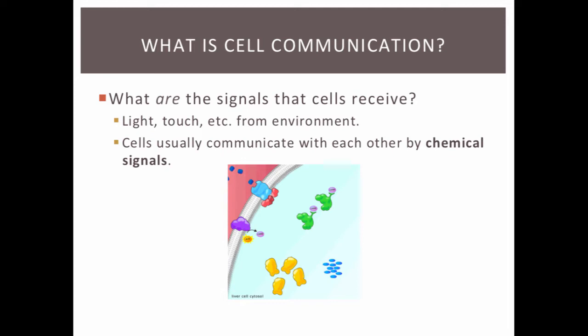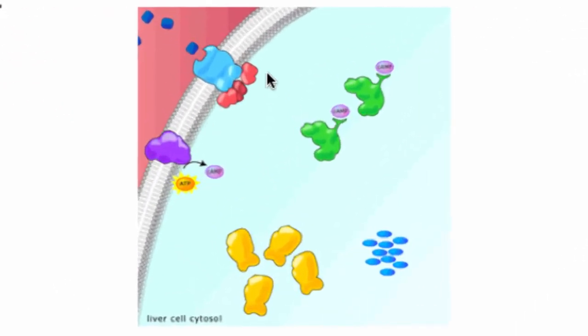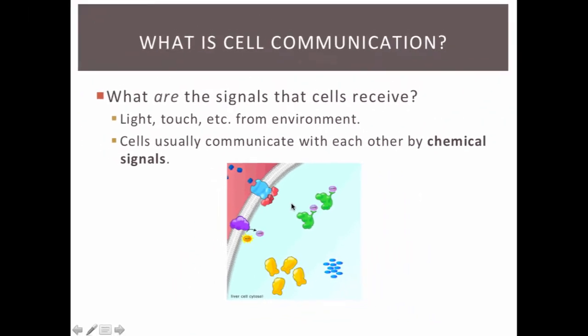For example, if your neuron needs to communicate to your muscle and tell it to move, your neuron will secrete a chemical known as a neurotransmitter. That chemical will bind to a receptor on the surface of your muscle cell, or a receptor that's inside of your muscle cell.